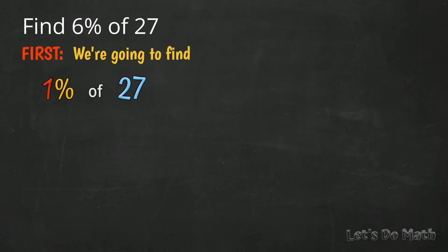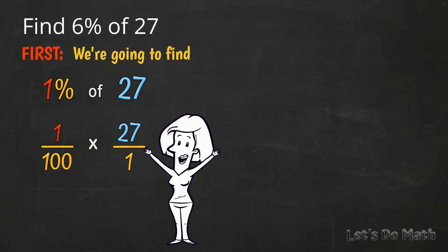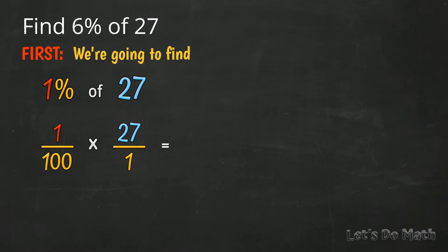First, we're going to find 1% of 27. 1% is the same as 1 hundredth times 27. I put that over 1 and now I've got a simple fractions multiplication. This comes out to 27 divided by 100.